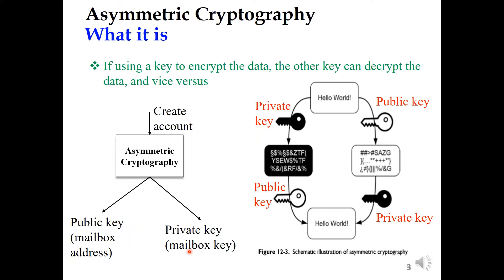The characteristic of these two keys is like this: if you use one key to encrypt the data, you can use the other key to decrypt the data, and vice versa. For example, if we have the message 'Hello World' and we use the public key to encrypt this message, then we can use the private key to decrypt it to see the original information 'Hello World'. And again, if you use the private key to encrypt 'Hello World', then you can use the public key to decrypt the message to see the original information 'Hello World'. That's the characteristic of asymmetric cryptography.